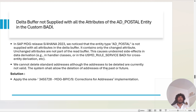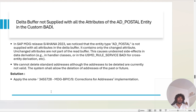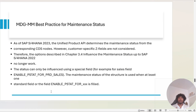The next issue is the delta buffer not being supplied with all attributes of the AD postal entity in a custom BAdI. We had derivations based on AD postal, and whenever we updated a field in address master data — for example the city — the city was not appearing in the importing parameter of the cross-entity BAdI. Our derivations were not working properly. We reached out to SAP, they told us to implement the relevant note, and the issue got fixed.